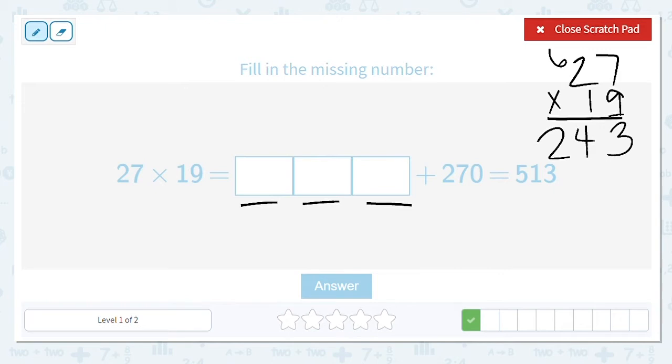Then we said the next partial product is 270. Now to check it to make sure that our partial product here is correct, let's add it up and we should get 513. 3, 4 plus 7 is 11, 5. Good job, so our missing partial product is 243.